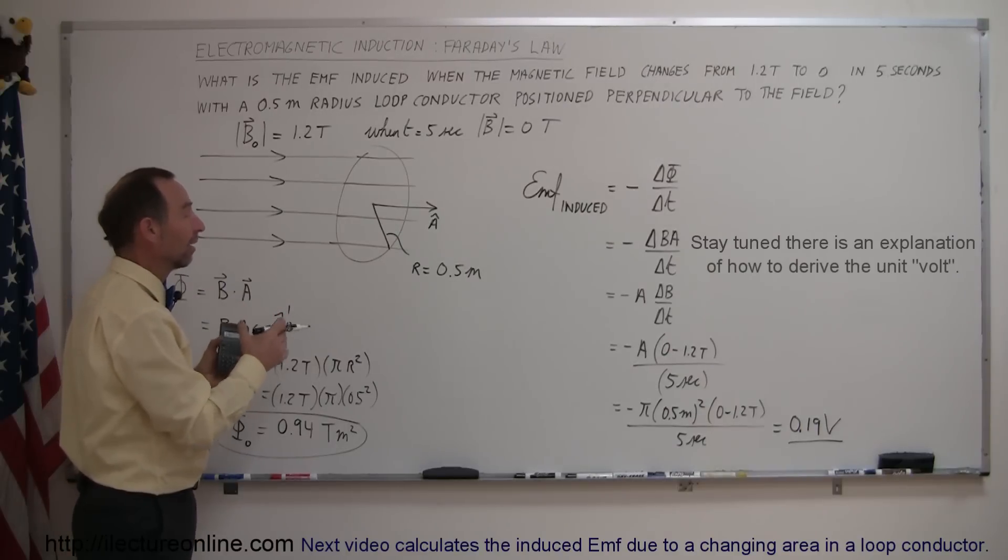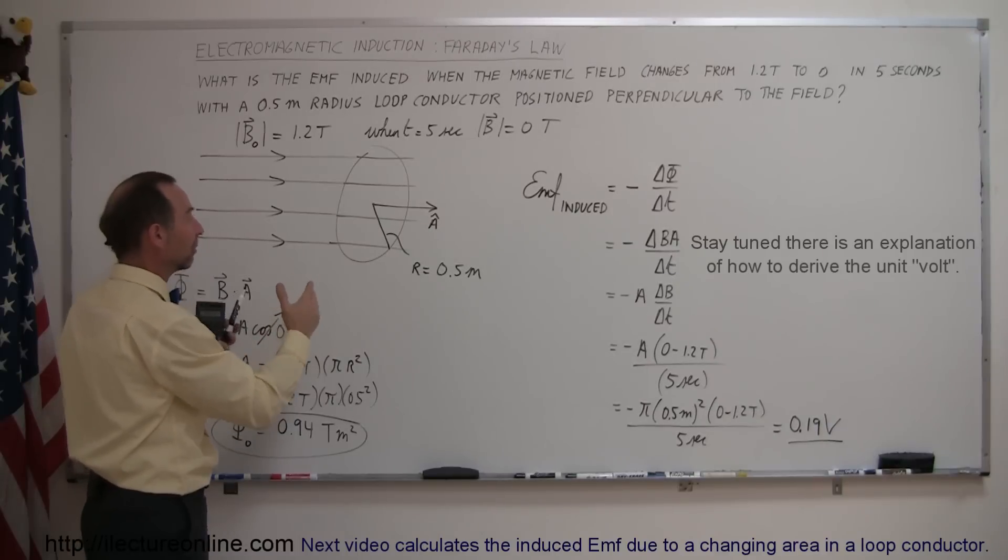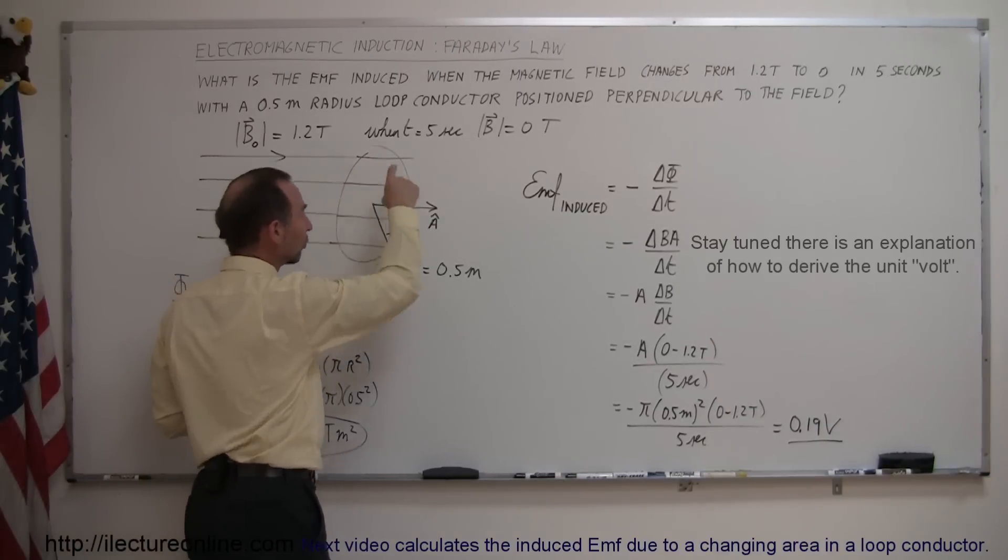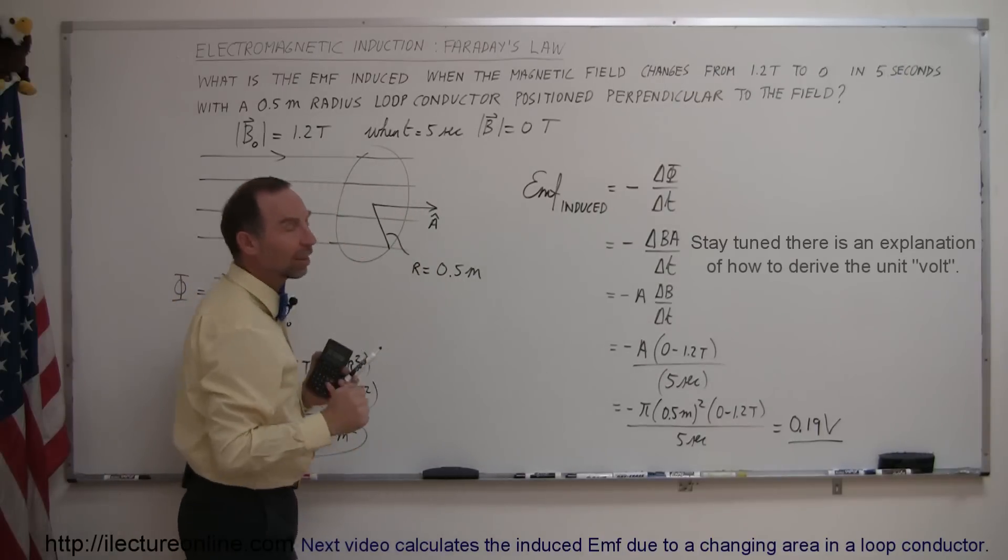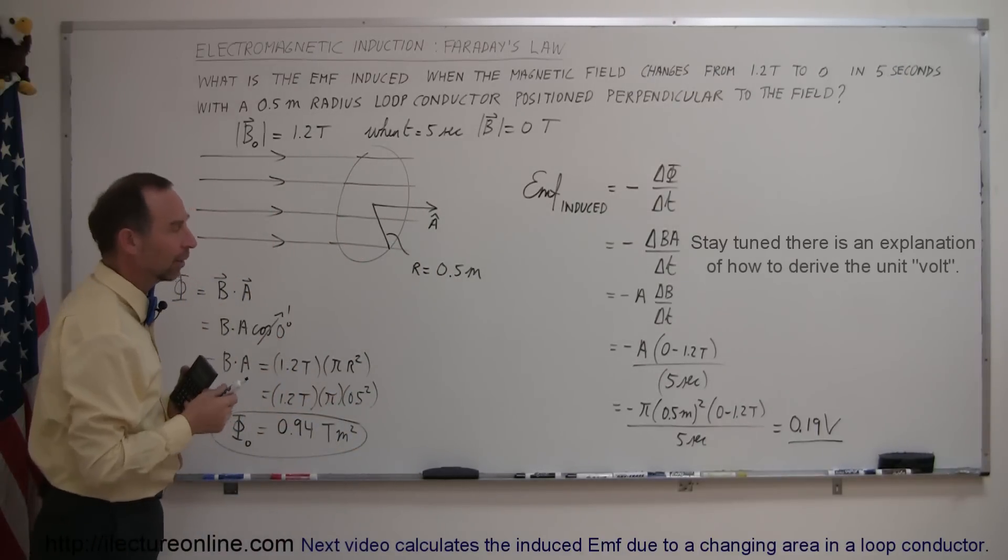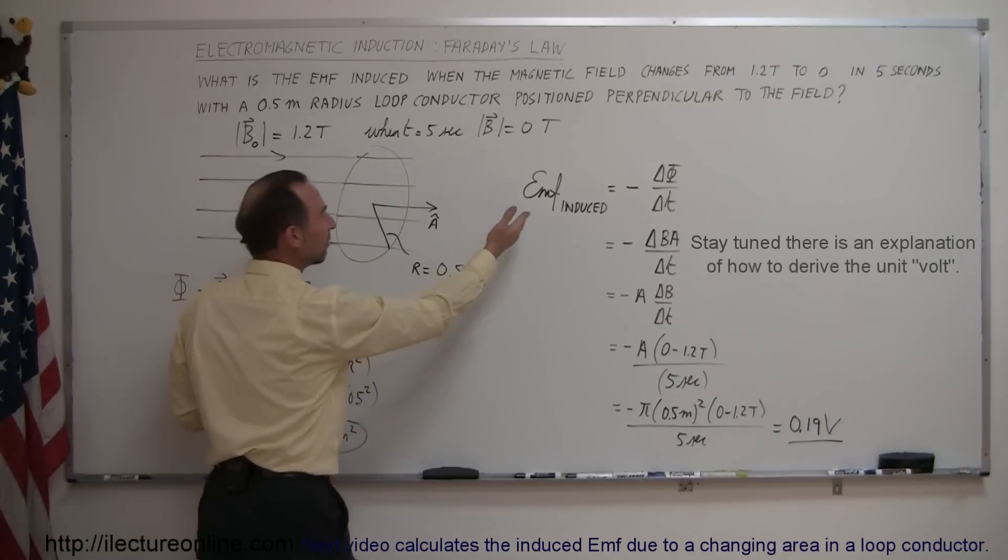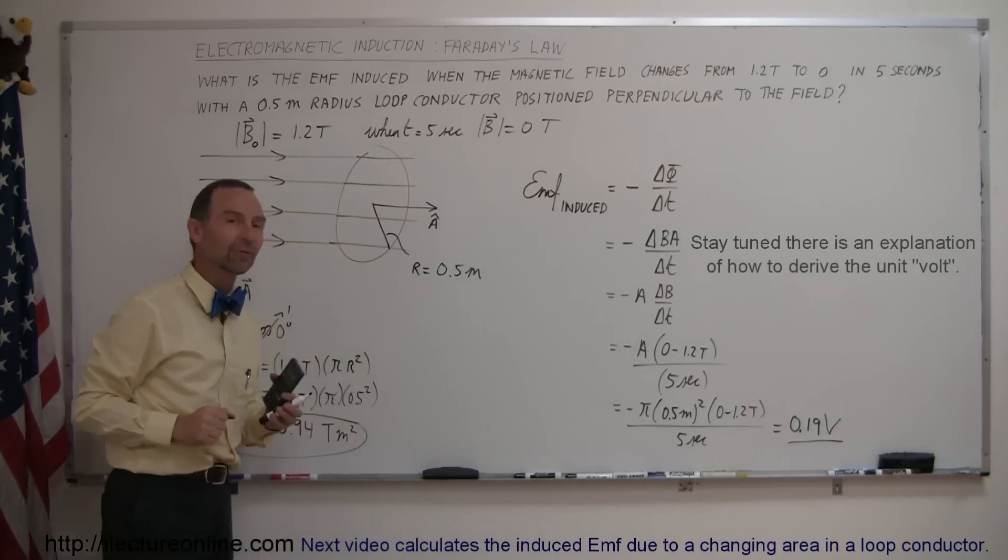We're actually inducing a voltage on that loop, even though there's no batteries, there's no power supplies, simply by changing the magnetic flux through the loop, it acts as if there's a magical battery there, pushing current through the loop, because there's a potential difference, an apparent potential difference, what we call an EMF induced equal to 0.19 volts.